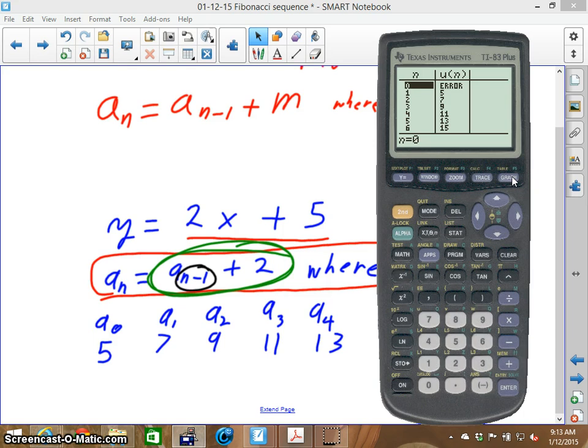So, right here it says 0 is an error because there's no number before 0. But, the sequence is correct. It says 5, 7, 9, 11, and 13. It keeps on going on forever.